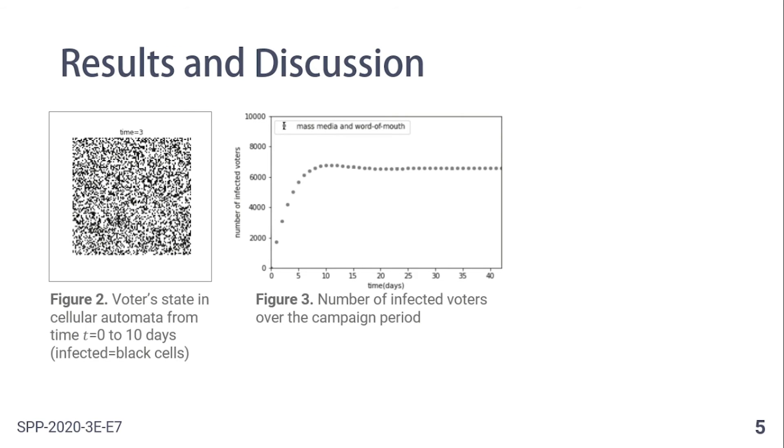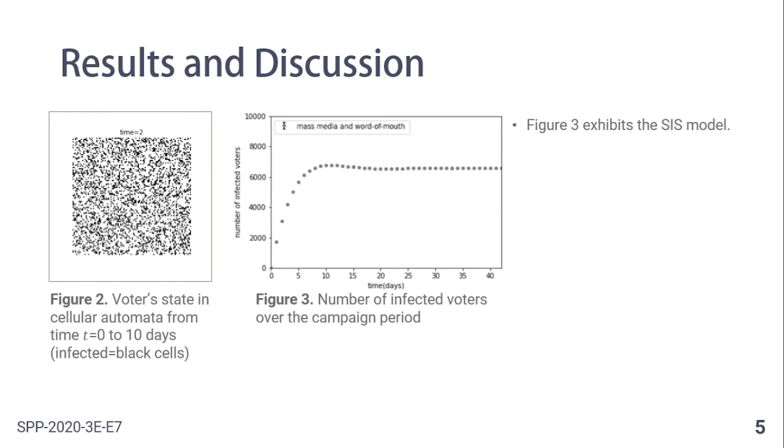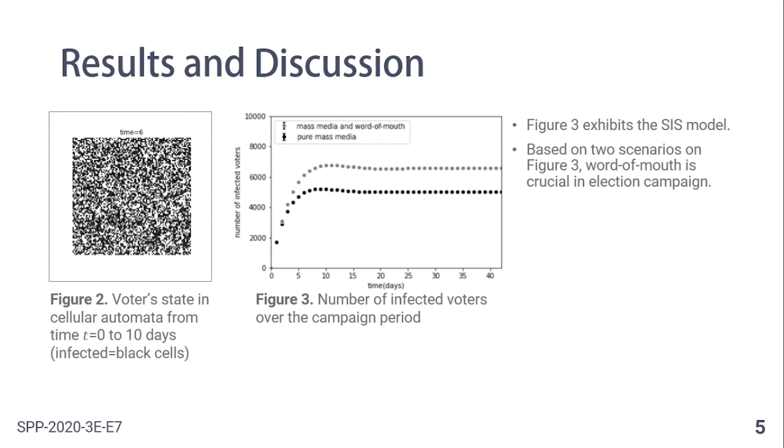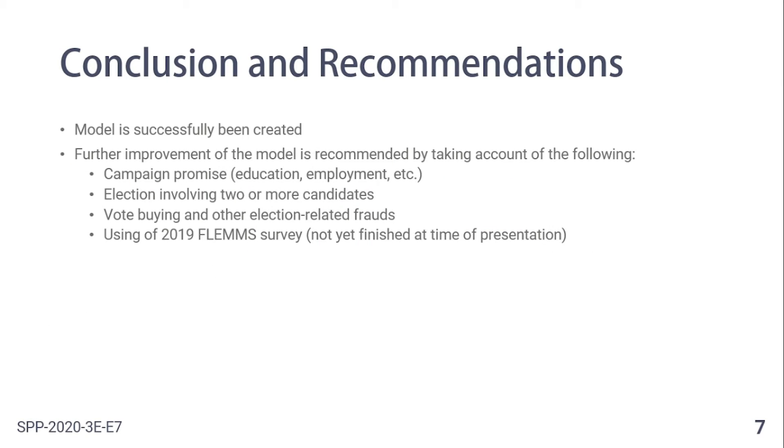Here are the key results. The graph showing the number of infected voters versus time depicts the SIS model. If only political ads are present, the final number of infected voters at campaign deadline decreases. This shows how crucial word-of-mouth is in an election campaign. The influence of political ads and word-of-mouth depends on the age and highest educational attainment of the voter. Consequently, although the model has successfully been created, improvements are recommended such as inclusion of other factors like campaign promise in a two-man election. Thanks for listening.